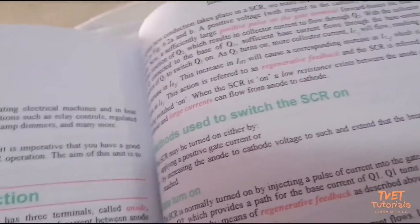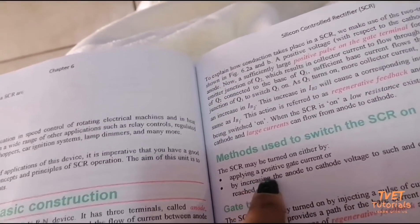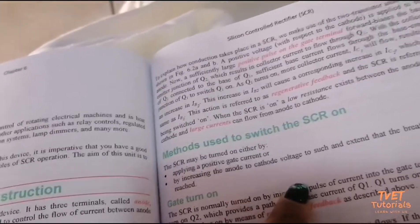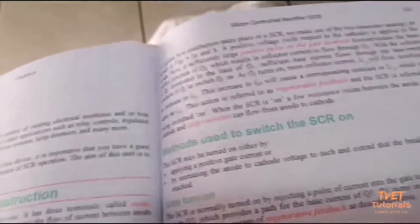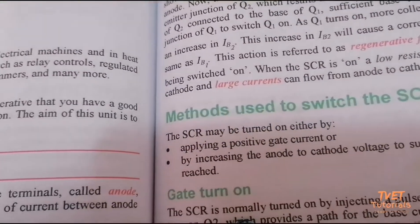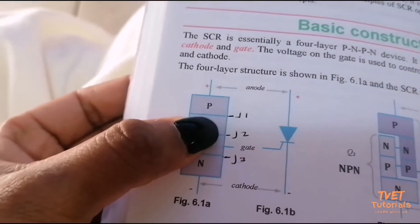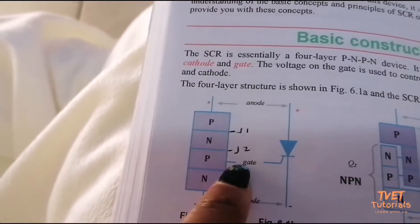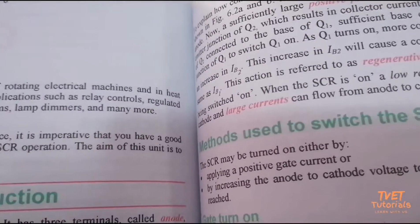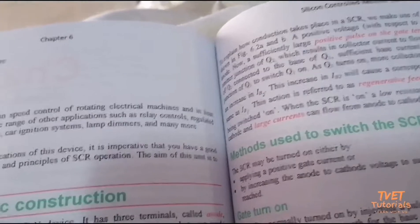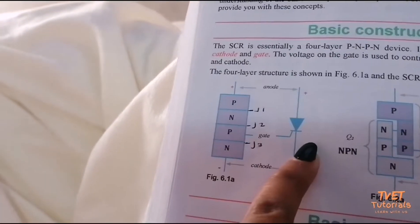Methods used to switch the SCR on: first, applying a positive gate current — by applying a positive signal to the gate, J2 will be forward biased and the circuit will be on. Second, by increasing the anode-cathode voltage to such an extent that the breakover voltage is reached.